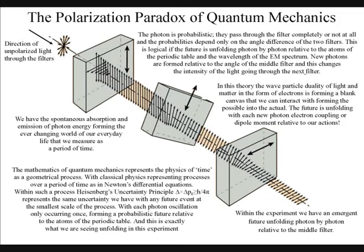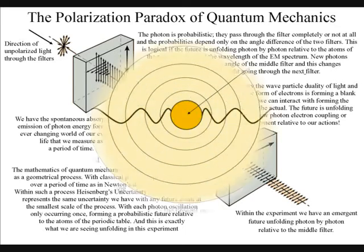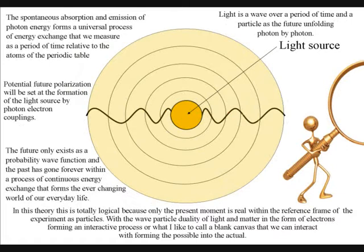This is logical if the future is unfolding photon by photon relative to the atoms of the periodic table and the wavelength of the electromagnetic spectrum. New photons are formed relative to the angle of the middle filter and this changes the intensity of the light going through the next filter in this theory.